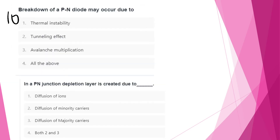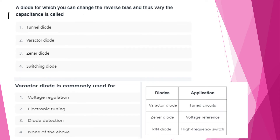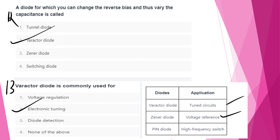Breakdown of a PN diode may occur due to thermal instability, channeling effect, or avalanche multiplication — all of the above. The depletion layer in a PN junction is created due to diffusion of majority carriers. A diode for which you can change the reverse bias to vary the capacitance is a varactor diode, commonly used in electronic tuning. Applications summary: varactor diode — tuned circuits; Zener diode — voltage reference; PIN diode — high frequency switch.